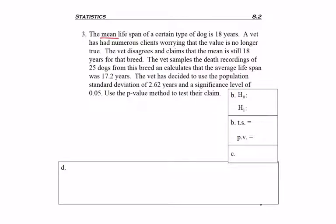The mean life of a certain dog is 18, so mu equals 18. A vet has numerous clients worrying that the value is no longer true. That would be not equals to, but keep reading. The vet disagrees and claims that the mean is still 18 years. That means mu equals 18 is our claim.